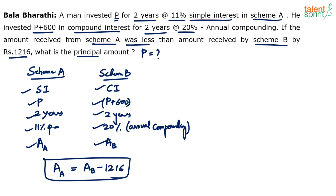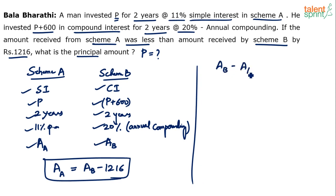From this we have to calculate P. We can rewrite: amount in B minus amount in A equals 12.16. Amount in B is compound interest of B plus principal of B. Amount in A is simple interest of A plus principal of A.